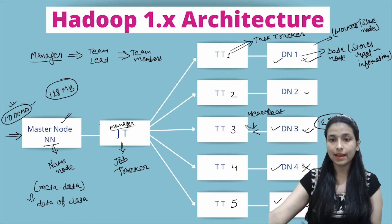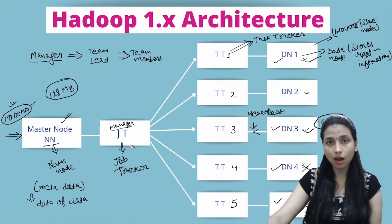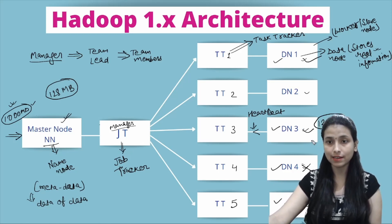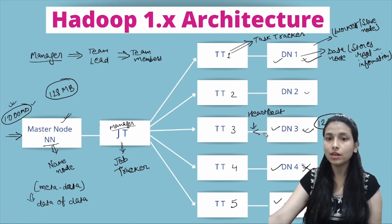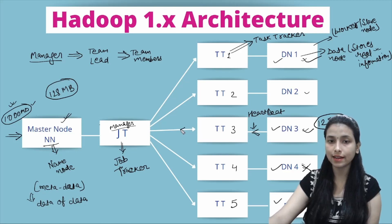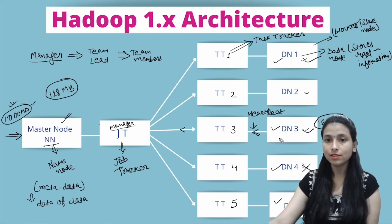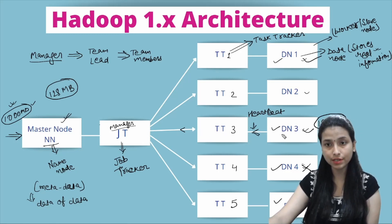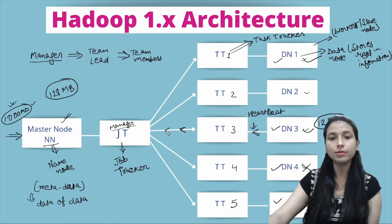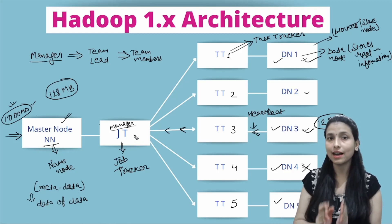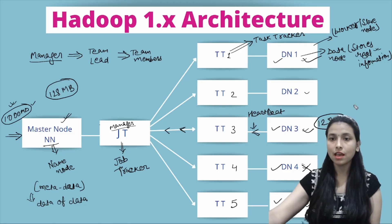The heartbeat signal is sent so the Job Tracker knows the Data Node is alive and not crashed. The Data Node sends the heartbeat to its attached Task Tracker, and the Task Tracker forwards this signal to the Job Tracker. Once the file is completely stored, a final signal is sent to the Job Tracker confirming that the chunk has been successfully stored.